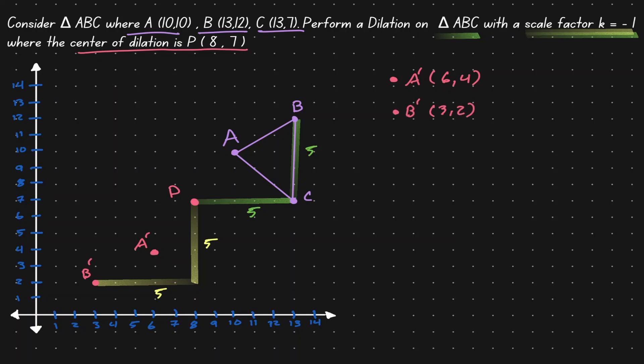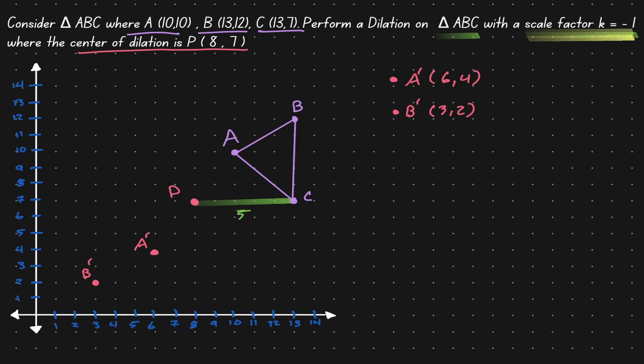Let's clean this up and do the same for point C. So let's find the distance from P to C, which is just five units to the right. Because we have a scale factor of negative one, we want to do the opposite. So from P, let's go five units to the left. And it's at this location where we're going to find C', at the location (3,7).